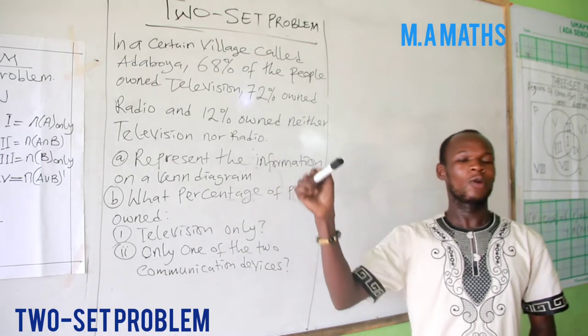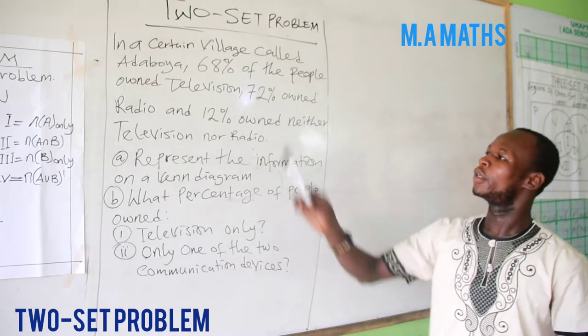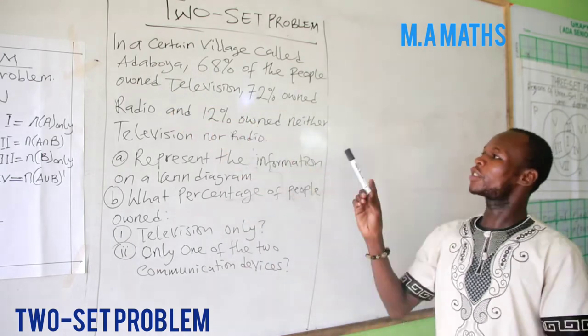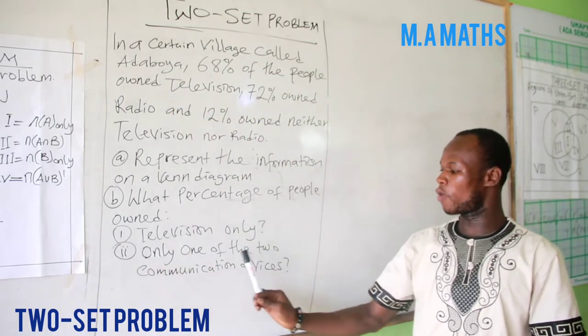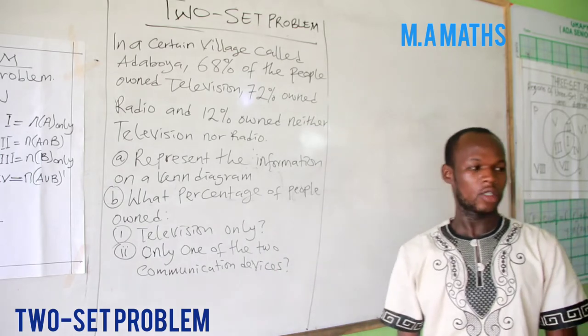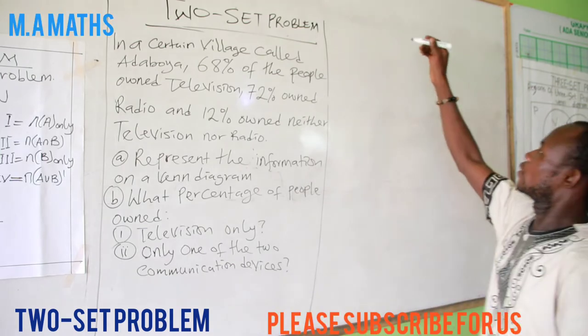In a certain village called Adaboya, 68% of the people owned televisions, 72% owned radios, and 12% owned neither television nor radio. Roman numeral one: represent the information on a Venn diagram. Roman numeral two: what percentage of the people owned only one of the communication devices? So let's solve this question together.